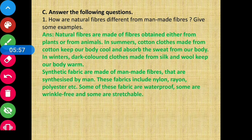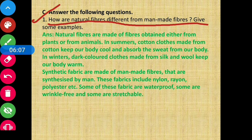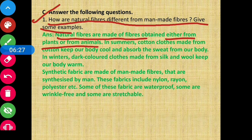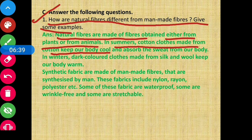Moving on to Section C: Answer the following questions. Question number one: How are natural fibers different from man-made fibers? Give some examples. Natural fibers are obtained either from plants or from animals. In summer, cotton clothes made from cotton keep our body cool and absorb sweat from our body.